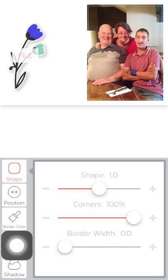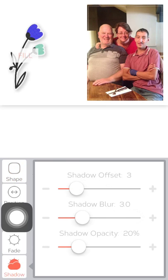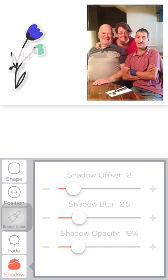I'm also going to alter the shadowing slightly, so again we're coming to Bubble Style and the Shadow option at the bottom. I'm going to reduce the offset and the blur down slightly to about 25, and I'm going to leave the opacity at about 18.